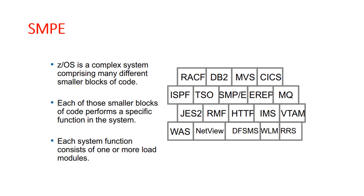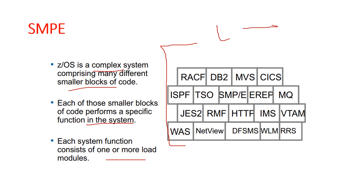z/OS is a complex system composed of many different smaller blocks of code. As you can see in this diagram, each of these smaller blocks of code performs a specific function in the system. Each system function is composed of one or more load modules. In the z/OS environment, a load module represents the basic unit of machine-readable and executable code. Load modules are created by combining one or more object modules and processing them with the link edit process.